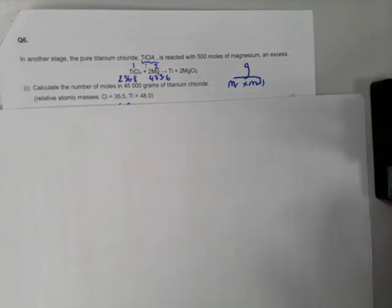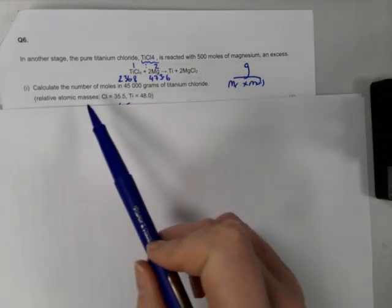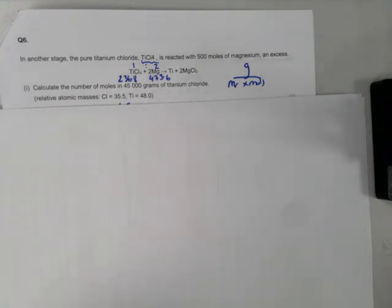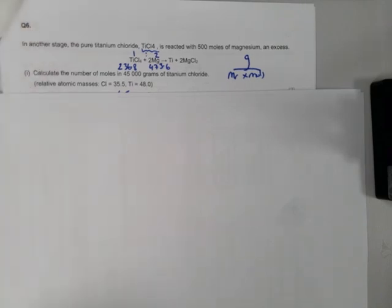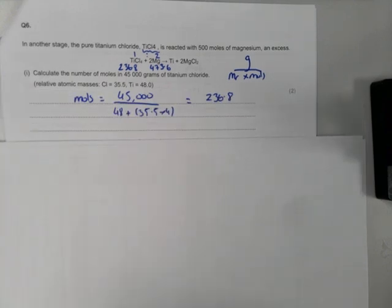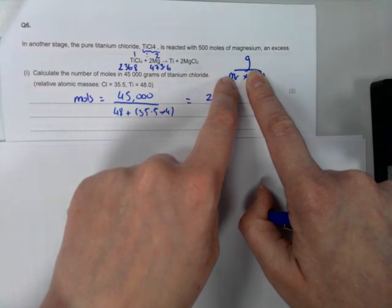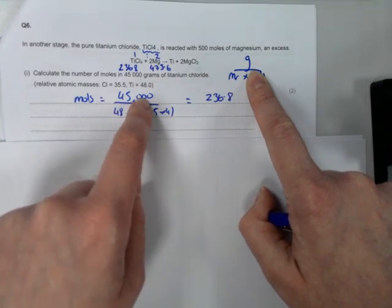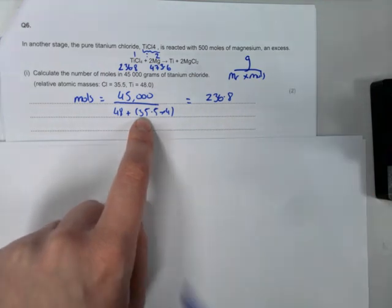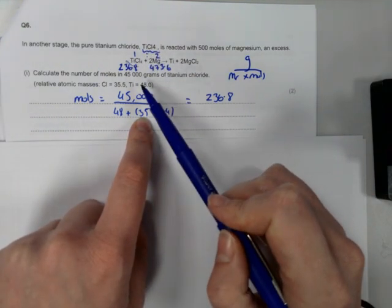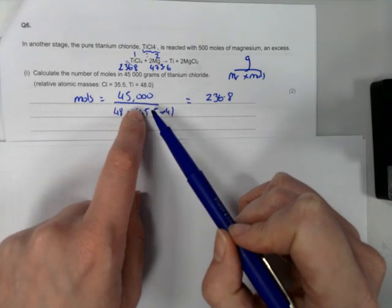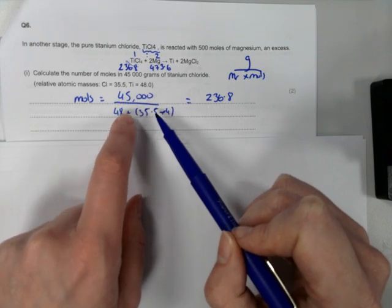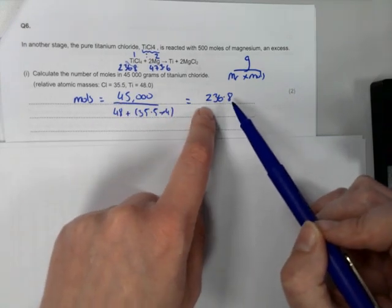The next question is a moles question. You're going to use your G-Mr-moles triangle. You're asked to calculate the number of moles in 45,000 grams of titanium chloride. Using the triangle, moles equals grams divided by formula mass. Titanium chloride is TiCl₄: titanium has a mass of 48, chlorine is 35.5, and there are four of them. Mass divided by formula mass equals moles — 236.8.